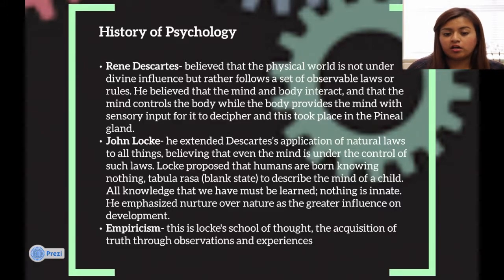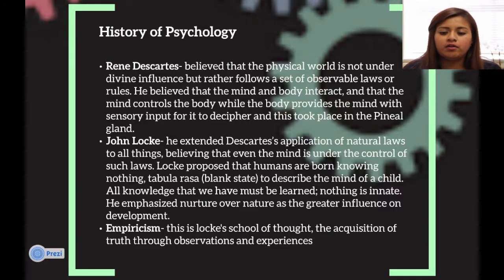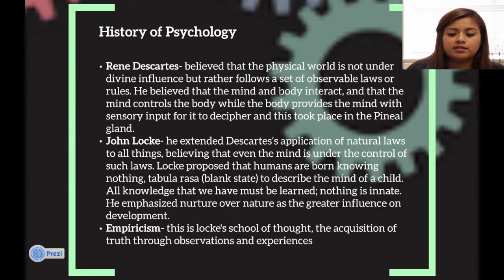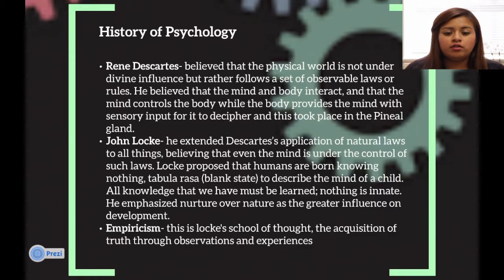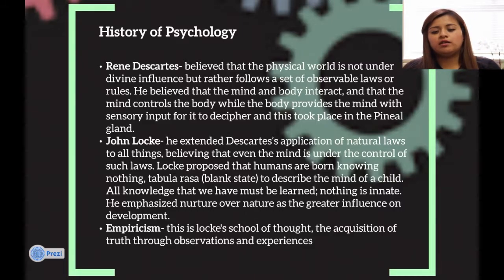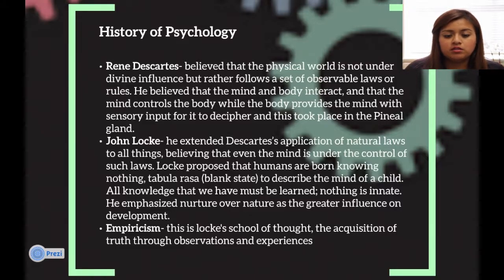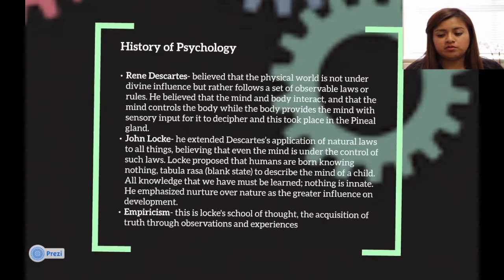John Locke extended Descartes' application of natural laws to all things. He believed that even the mind is under control of such laws. He proposed that humans are born knowing nothing, such as the blank state to describe the mind's child. He acknowledged that all things are learned and not innate. He emphasizes nurture over nature as a greater influence of development. Empiricism is Locke's school of thought and acquisition of truth through observable experience.